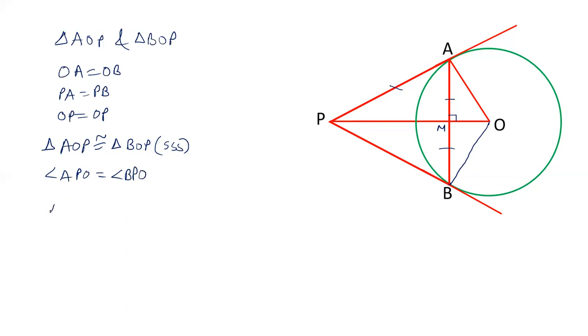And now we will take triangle APM and triangle BPM. In these two triangles, angle APM and BPM are equal. AP and PB are equal and PM is equal to PM. And therefore triangle APM congruent to triangle BPM by side angle side.